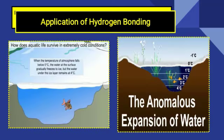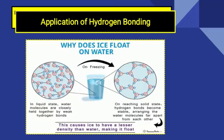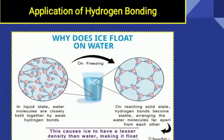Water mein ek unique property hai, jisko is behavior ki base pe 'anomalous behavior of water' ka title bhi diya jata hai. Yeh property kya hai? Isko detail mein samajhne ke liye hum water ki ice form ki taraf chalte hain. Humare paas yahan water in the form of ice nazar aa raha hai. Water nature mein students ek single substance aisa hai jo ke matter ki tinon states — solid, liquid, gas — mein exist karta hai.